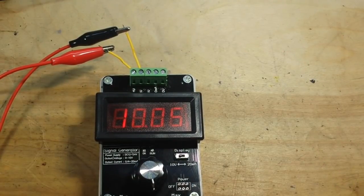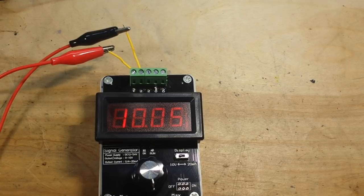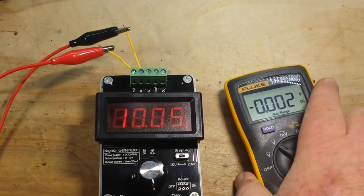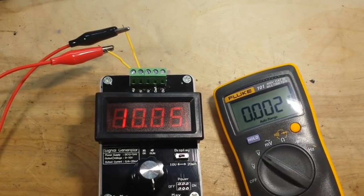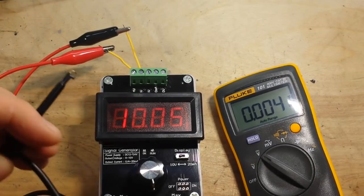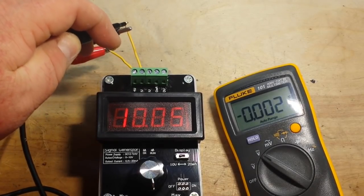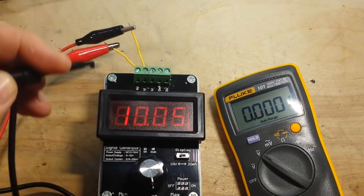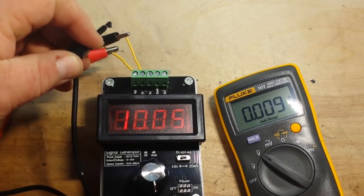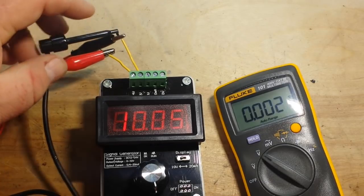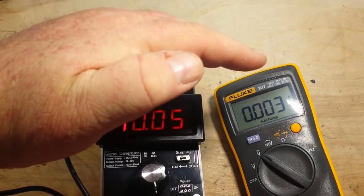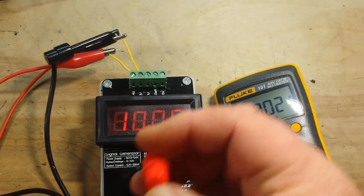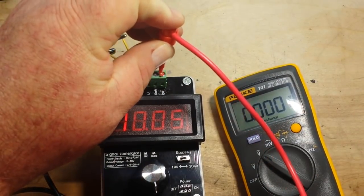So let's check the accuracy on that. Bring in a meter here. I'll just grab the Fluke. We'll set her for DC voltage. We'll just hook up our ground lead here. Doesn't want to stay on. Let's try again.